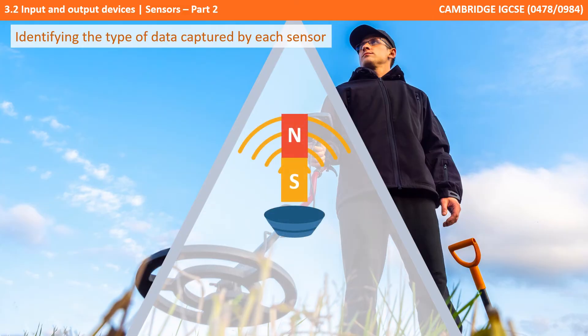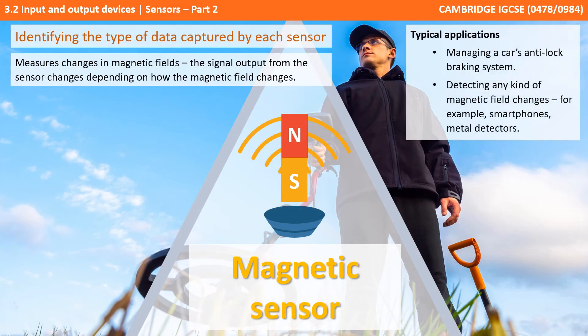Next we have magnetic sensors. These measure the changes in magnetic fields, i.e. the signal output from the sensor changes depending on how the magnetic field changes. Cars use these for anti-lock braking systems, and they can detect any form of magnetic field changes, for example in mobile phones and metal detectors.